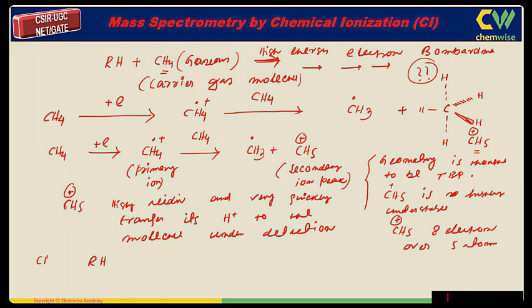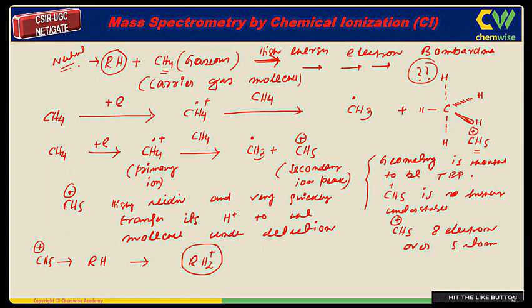So CH5 plus will transfer a proton to RH and it will be RH2 plus. Now see, initially RH was neutral molecules. So it was neutral. So it will never reach to the detector. With the help of the fantastic guy CH5 plus, now it becomes charged. So it will reach to the detector and we will get the mass of what? RH2. So we will get the mass. So RH2 plus mass will be obtained.